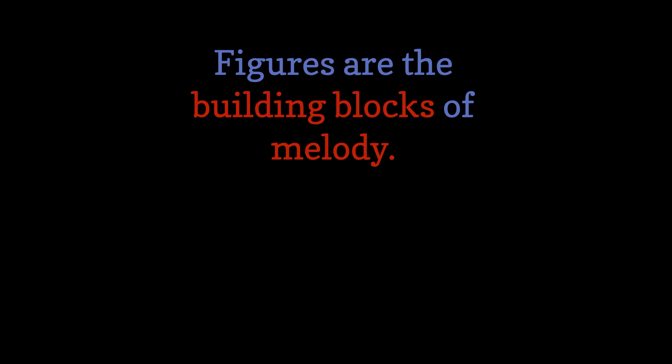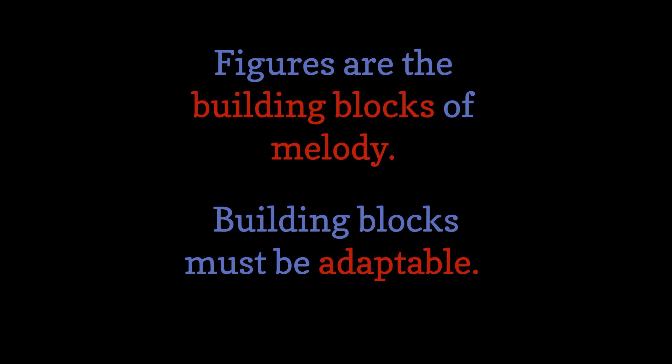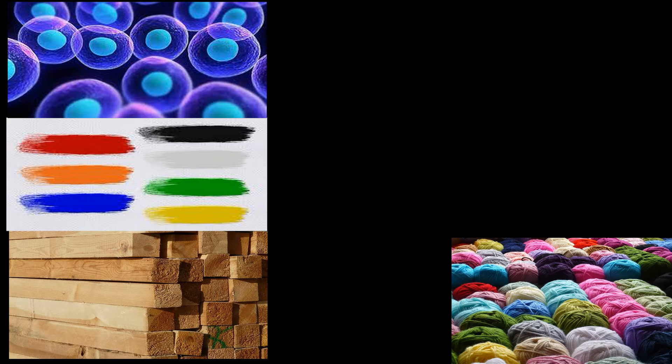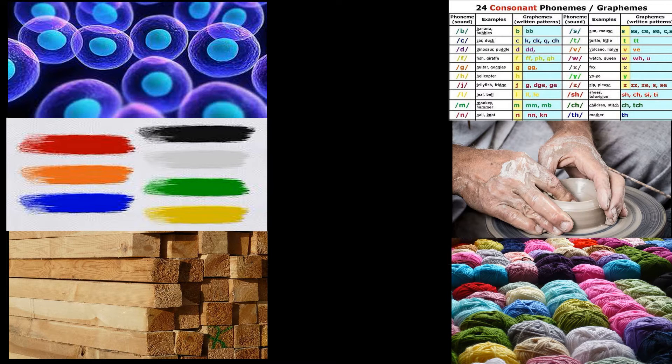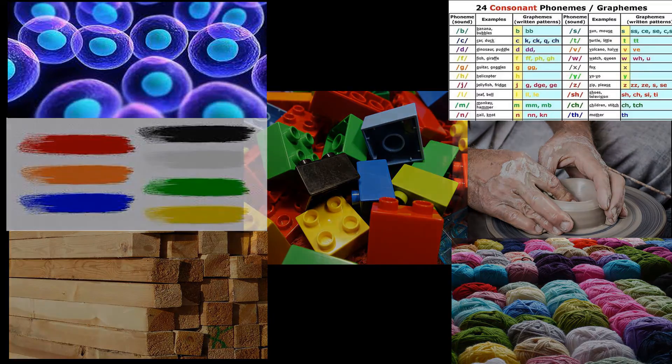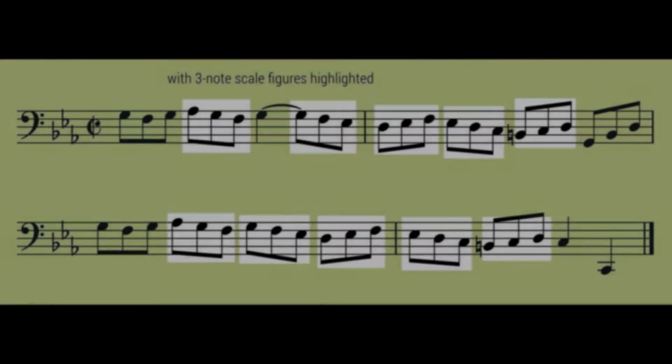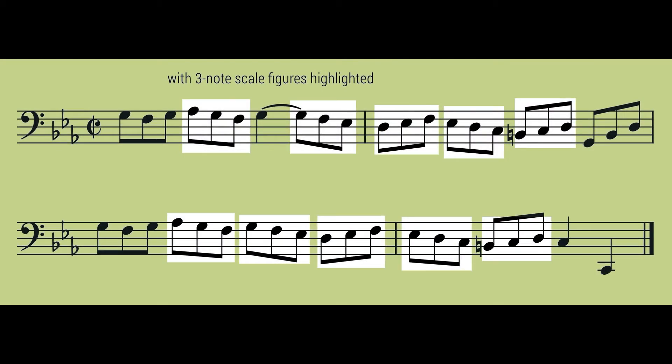Figures are the basic building blocks of melody, and a building block needs to be fully adaptable. Think stem cells, brushstrokes, lumber, yarn, phonemes, clay, or Legos. And that's certainly true for this piece, which is built mostly of one figure: the three-note scale. But unlike the motif from Beethoven's fifth, which has a bit of fire in its belly, no single three-note scale sounds very interesting on its own.